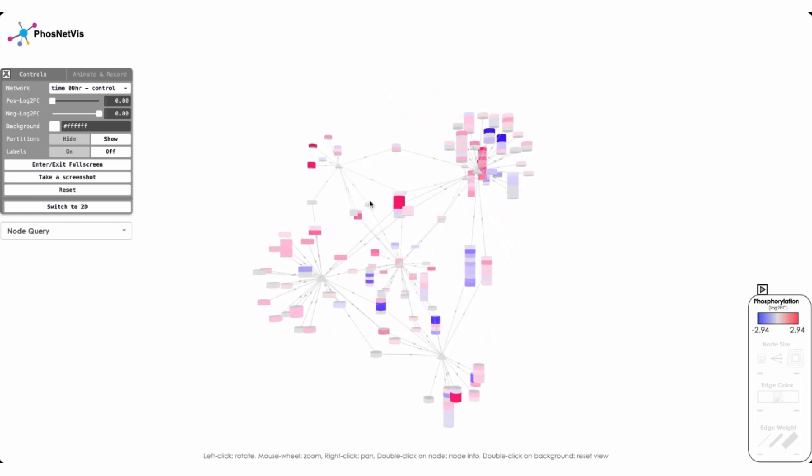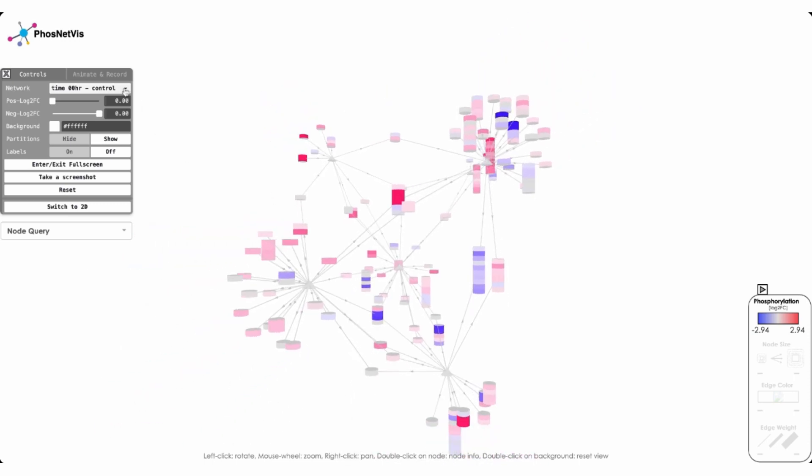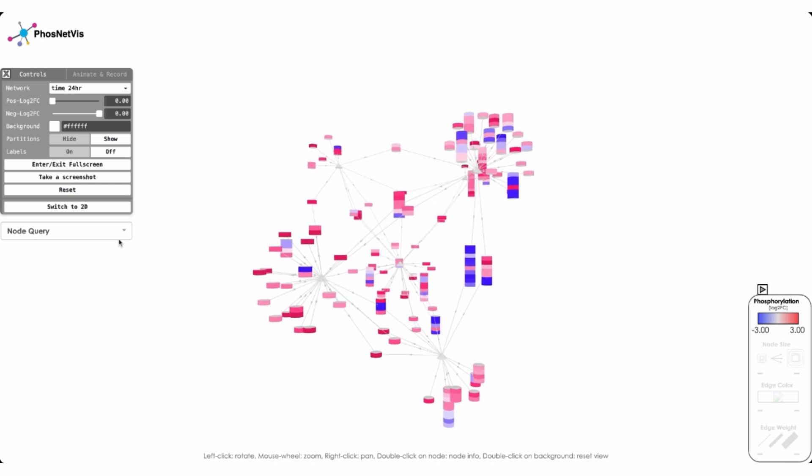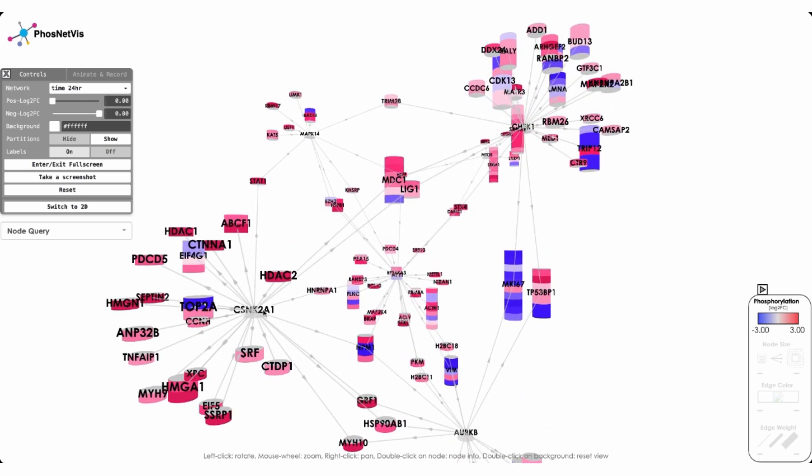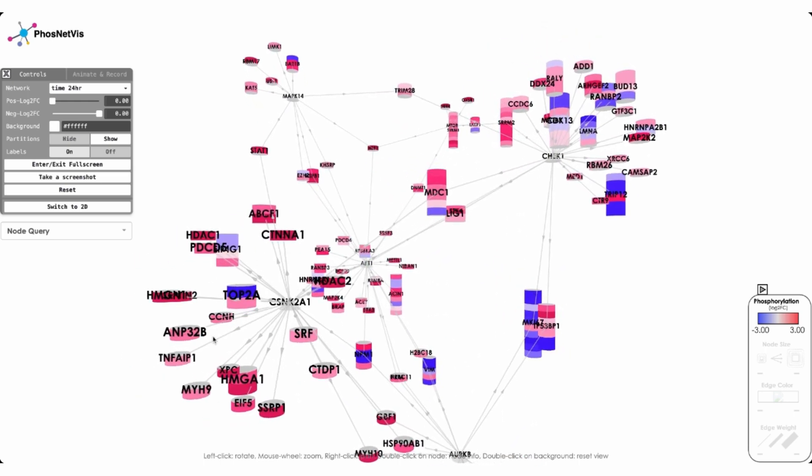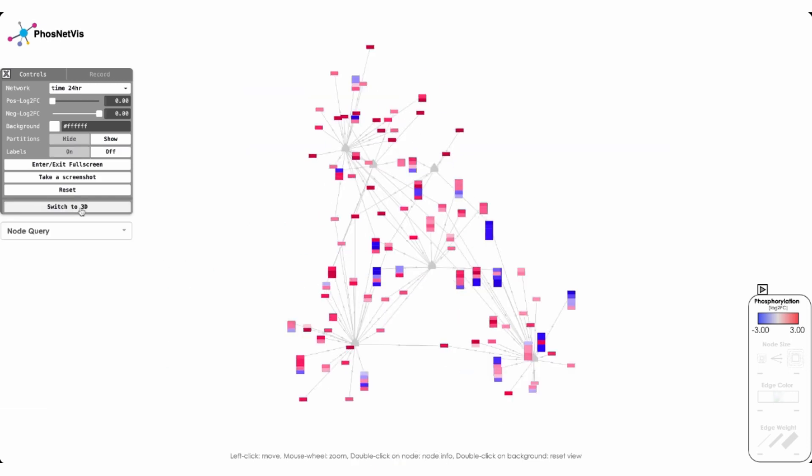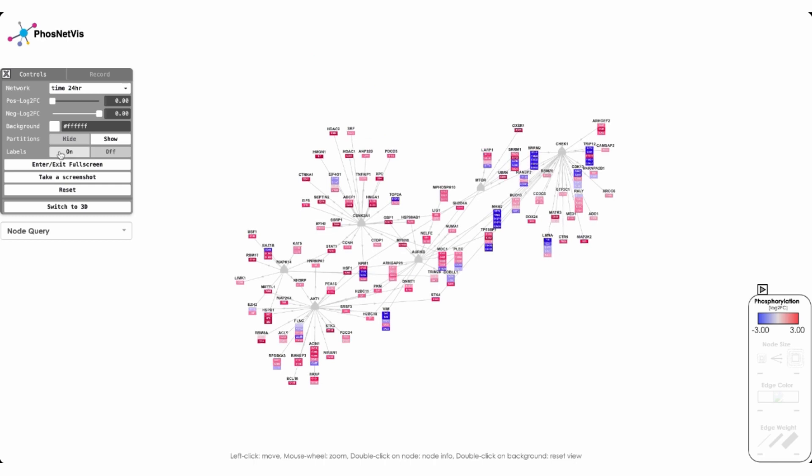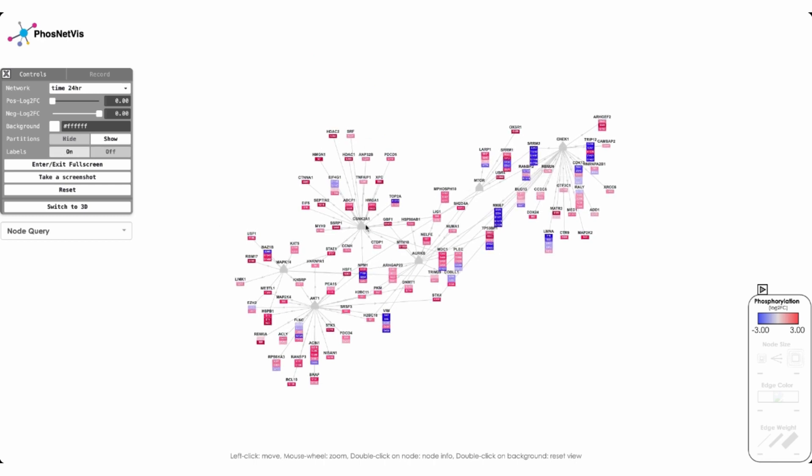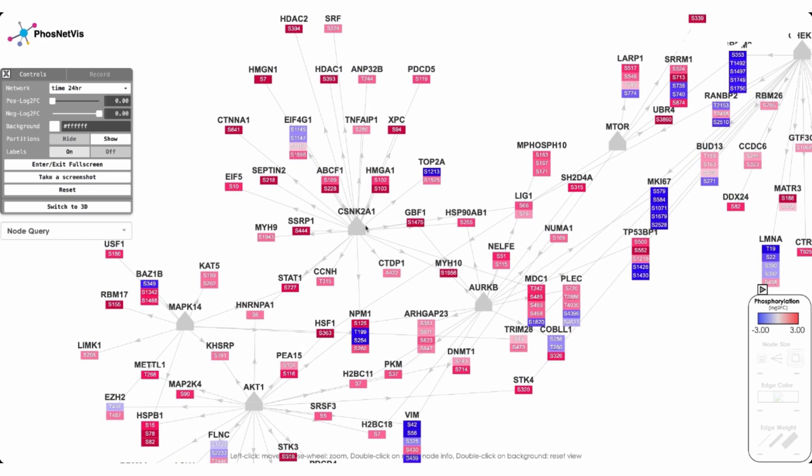So here, this is a time zero of SARS-CoV-2 network, which changes over time. So if we go to 24 hours, these are much more pronounced, for example. And this is a 3D network. And now, we may want to have the labels so that we see what's happening here, CSNK2A1, where the targets of this kinase are predominantly increased in phosphorylation. But we may find 3D a little confusing. So in that case, we switch easily to 2D and then add the labels.